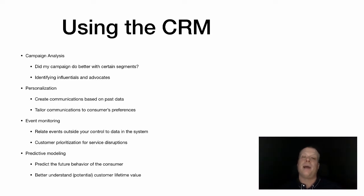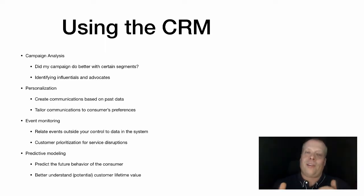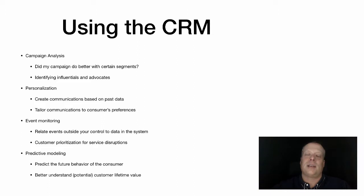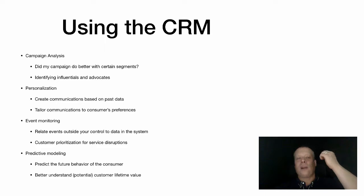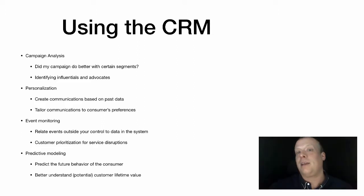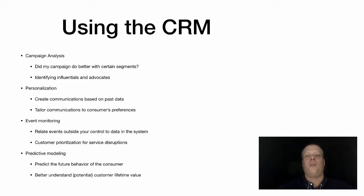Personalization is another key use: take into account past events to make sure future communications and recommendations are relevant. A classic example — someone posted on Twitter recently that they bought a toilet seat on Amazon and Amazon kept showing ads for more toilet seats. It's not like they needed 30 toilet seats; they bought one because it was broken. Certain products are utility purchases — you need them once and you're done. You need to think about why the consumer took that action and what it means for future recommendations.